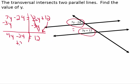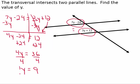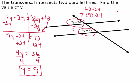To solve the equation, we're going to add 24 to both sides, leaving us with 4y is equal to 36. Divide both sides by 4, and we end up with y is equal to 9. We should check our solution by substituting 9 back into both angles, giving us 7 times 9 minus 24, which is 63 minus 24, leaving us with 39. For the other angle, 3 times 9 plus 12 is 27 plus 12, which is also 39.